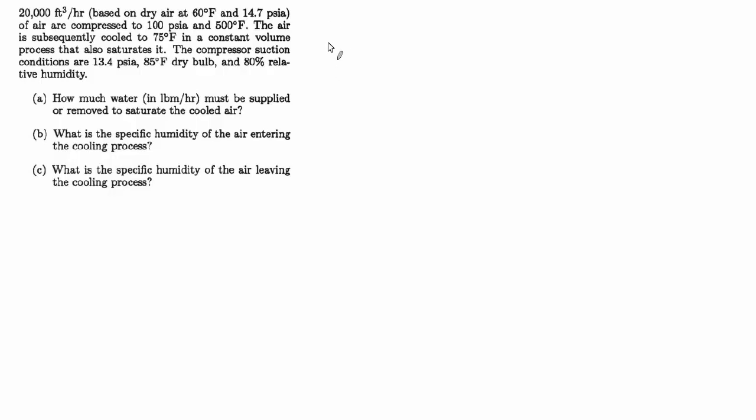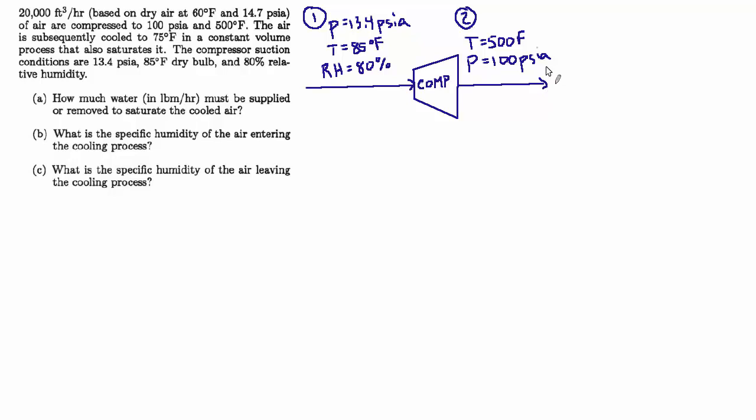So I'm going to define state one as being those compressor inlet conditions, which is P equals 13.4 psia, and the temperature equals 85 degrees, and the relative humidity is 80%. That's state one, and that enters a compressor. And then when it exits the compressor, let's call that state two. We know the temperature and pressure are 500 degrees and 100 psia. And then that goes to another process, which we've been told is a cooling process at constant volume.